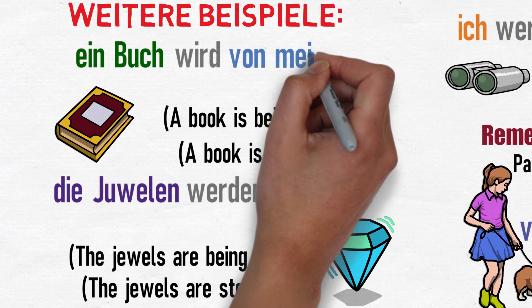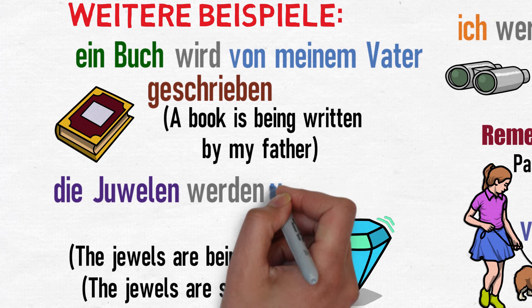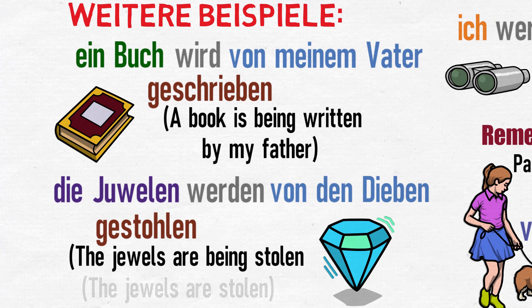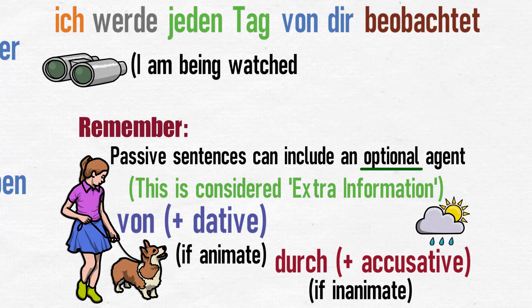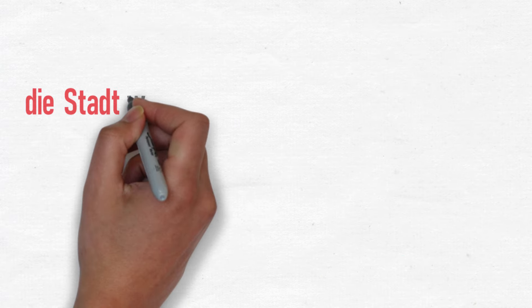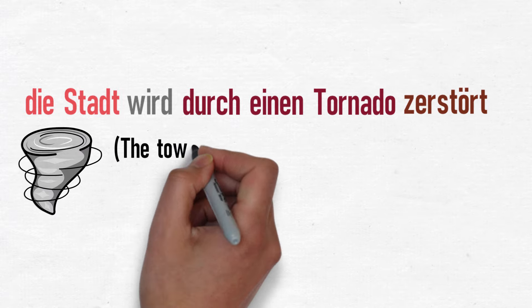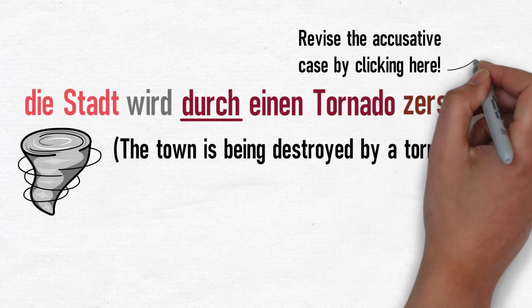'Ein Buch wird von meinem Vater geschrieben' — a book is being written by my father. 'Die Juwelen werden von den Dieben gestohlen' — the jewels are being stolen by the thieves. 'Ich werde jeden Tag von dir beobachtet' — I am being watched by you, in an informal singular sense, every day. 'Die Stadt wird durch einen Tornado zerstört' — the town is being destroyed by a tornado. Note that when the inanimate tornado is doing the destroying, we have to use 'durch' plus the accusative. If you need to recap the accusative and dative cases, please start by recapping the accusative by clicking the banner now.